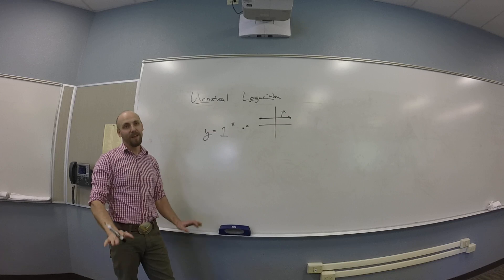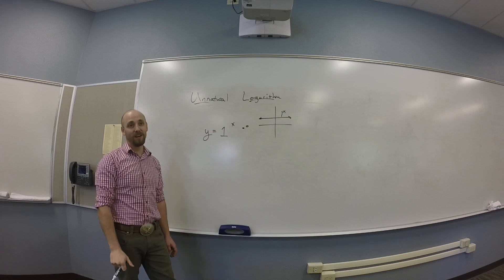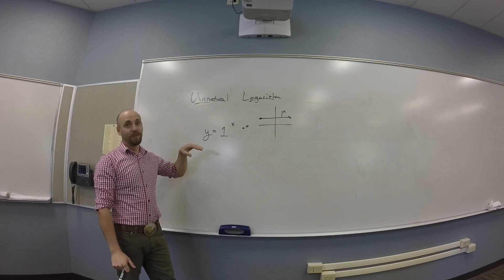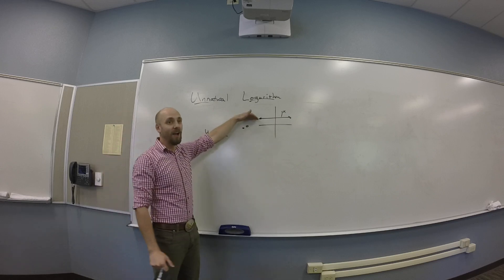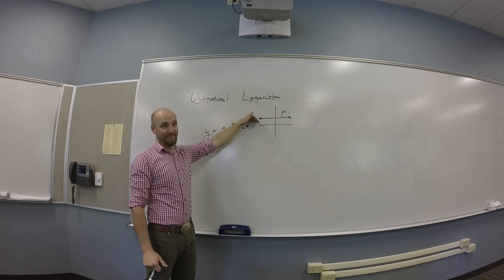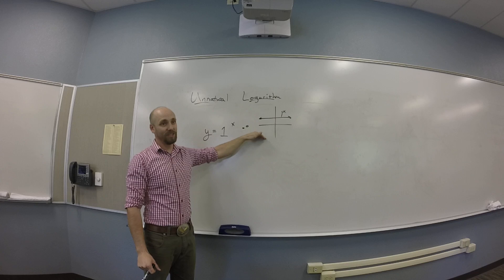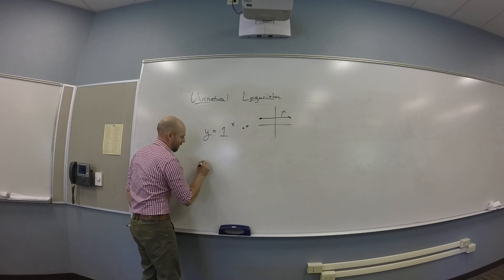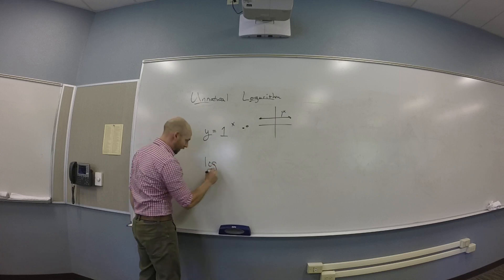Because a function fails the horizontal line test when some horizontal line hits it more than one time. This thing hits it infinitely many times. This thing doesn't have an inverse, which is why we're never going to write log base 1.